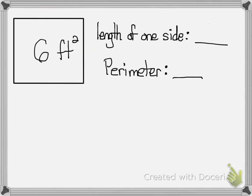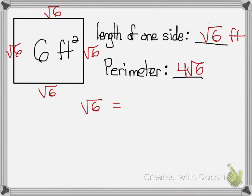And let's look at this last example. To find the length of one side I'll take the square root of 6. It's not a perfect square and I can't break it down so that's going to be just the square root of 6. That's the length of one side in feet. And then I know that each side is the square root of 6. So when I add all four of them I'll just get 4 square root of 6. And that's it!